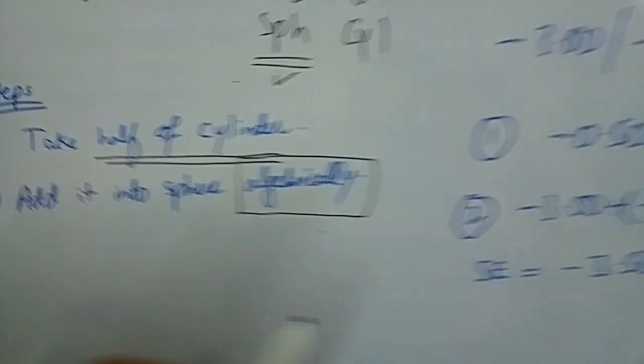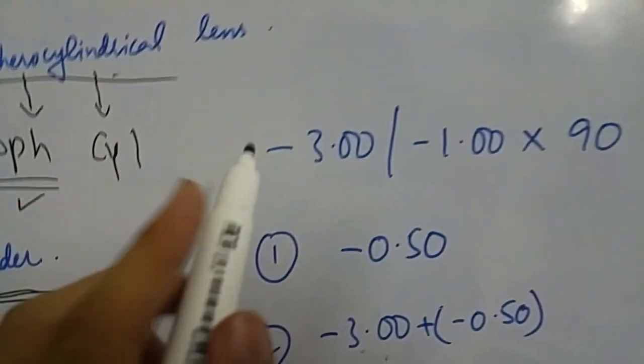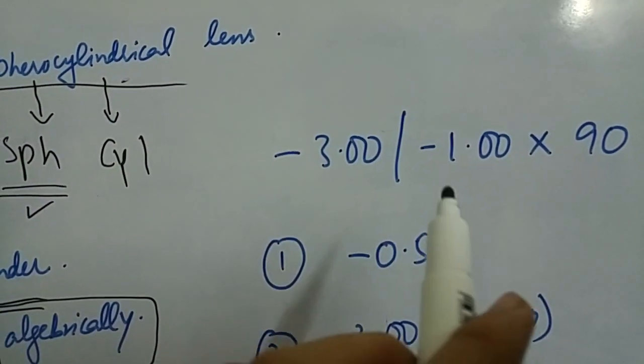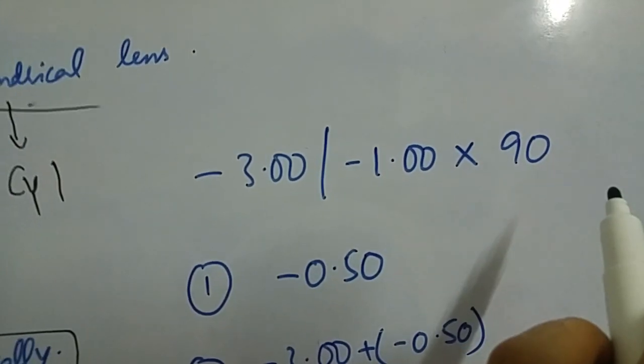Let's take an example. Let's suppose we have a prescription with minus 3 spherical and minus 1 cylinder at 90 axis.